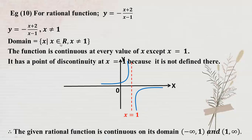The given rational function is continuous. It is continuous on its domain. So in this case, students can take the same part as the interval negative infinity to 1, and 1 to infinity. One to negative infinity is continuous. Rational function is continuous; it is not equal to one.